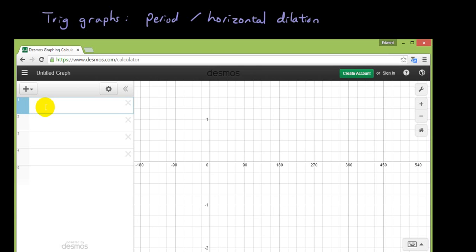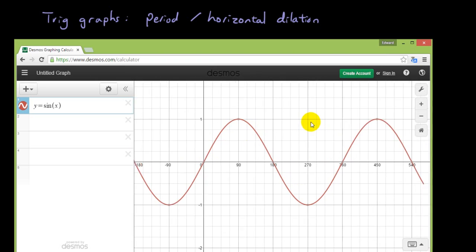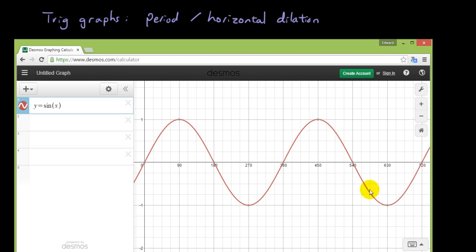So if you have a look at our default sine function, y equals sine theta, it goes from 0 to 360 degrees and that is one complete wave before it starts repeating itself again from 360 to 720.